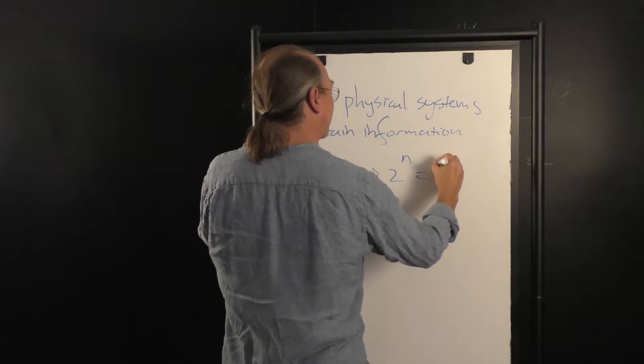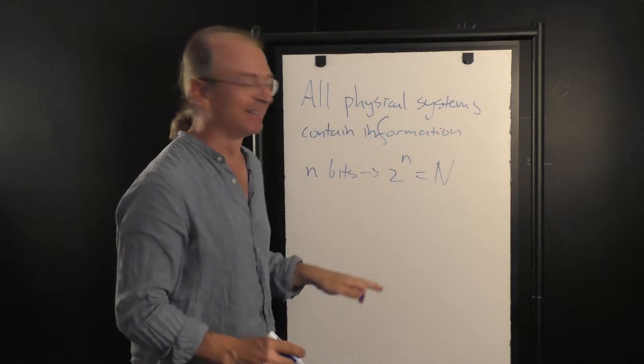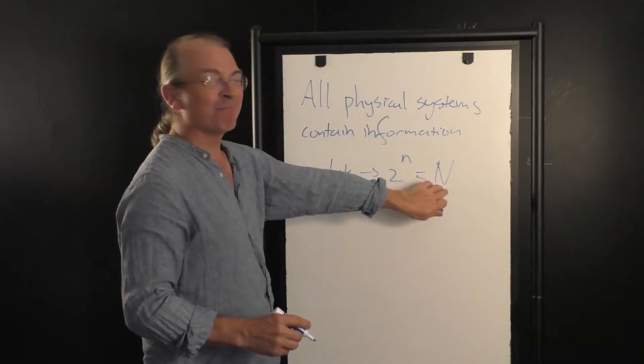which I'll represent as being capital N, because capital N is bigger than little n. It has 2 to the n possible states.